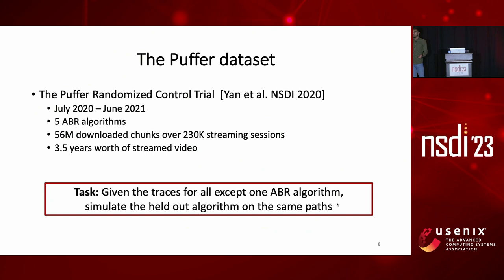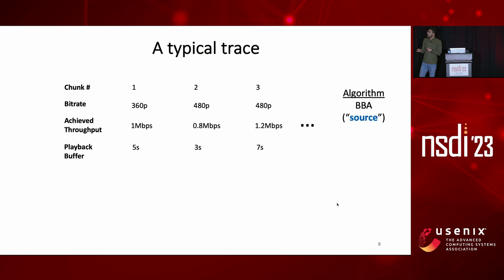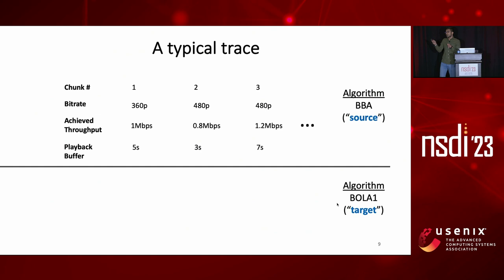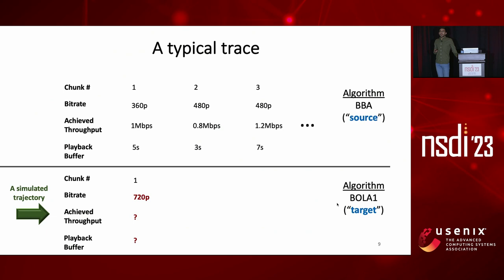Here's how a typical trajectory looks like in this dataset — it's a time series of bitrates, achieved throughput, and playback buffer. In this example, this trace was collected using BBA, which we refer to as the source algorithm. What we want to do is to simulate what would have happened to this trajectory had we used BOLA1, which we refer to as the target algorithm, under the exact same network conditions. This target algorithm may pick a different bitrate from the very first chunk, and we also want to simulate the question marks throughout the rest of the trajectory.